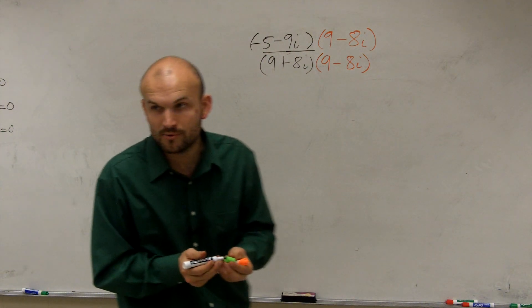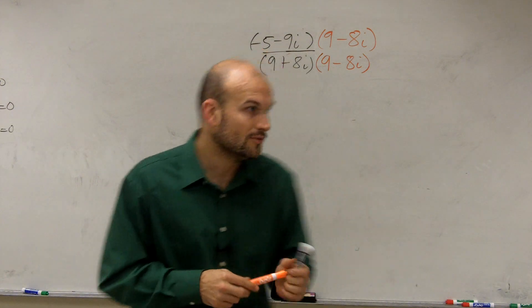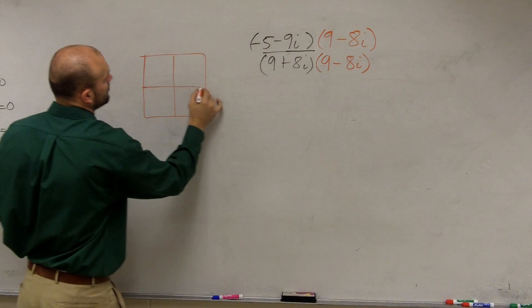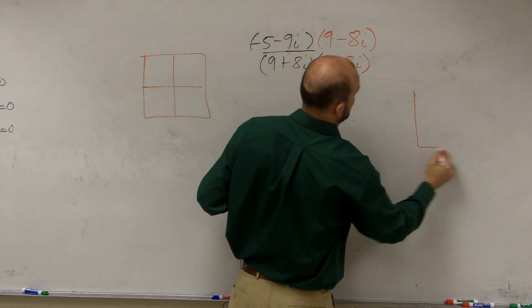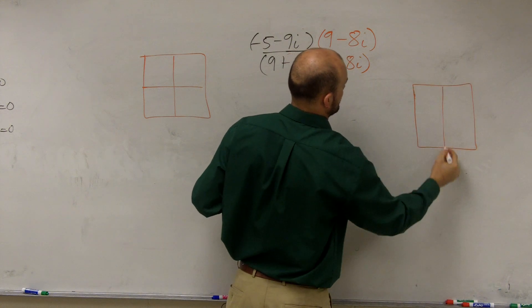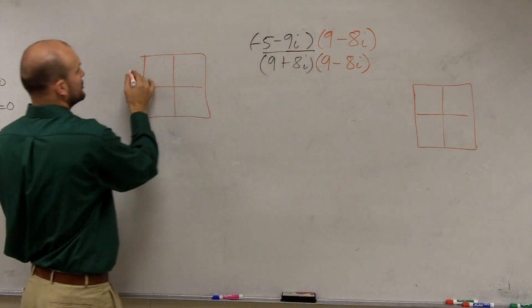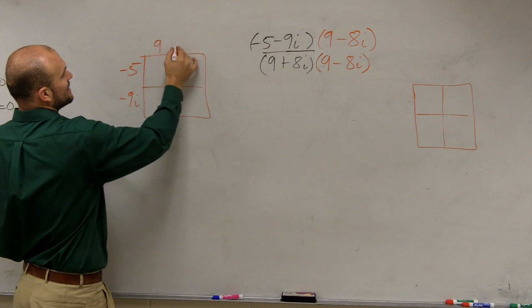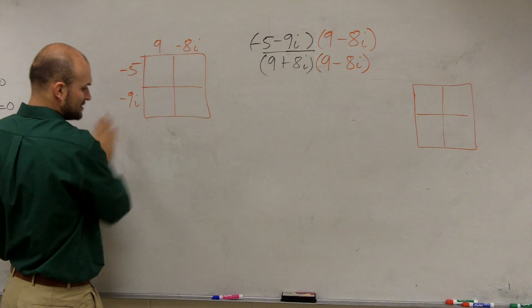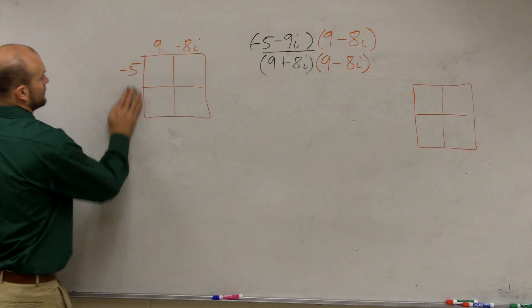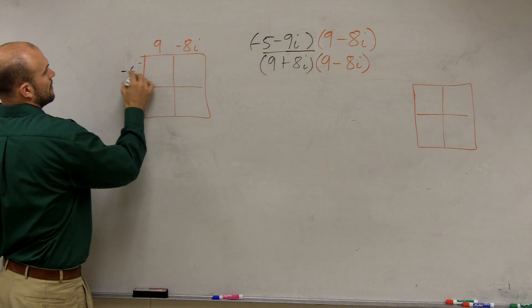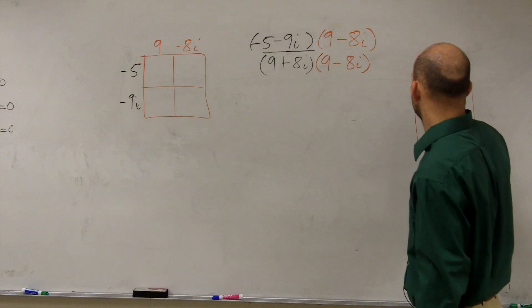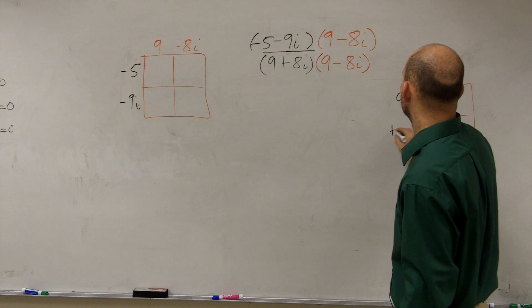Now, if you guys remember our homework on multiplying binomials? Yeah. So we have to do this twice. So create a box for both the top and the bottom. So let's do the numerator over here. So the numerator will be negative 5 minus 9i times 9 minus 8i. Actually, let's do that in black. Probably makes more sense. And then over here, let's do the denominator. So this is 9 plus 8i.